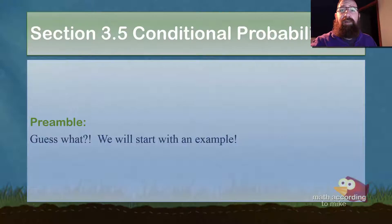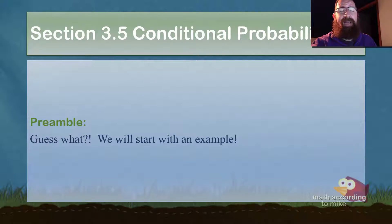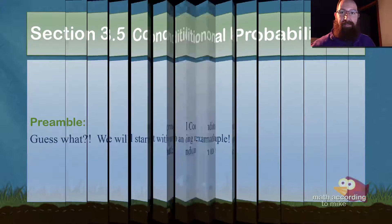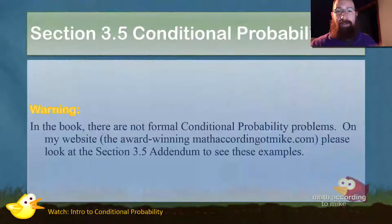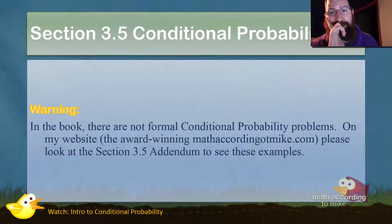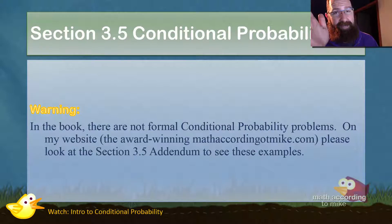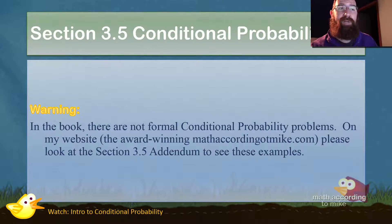3.5 Conditional Probability — we're starting with an example right away, which might seem intense. However, there is a warning: in the future this will be taken care of, but right now in the book there aren't any formal conditional probability problems.